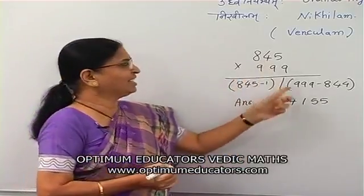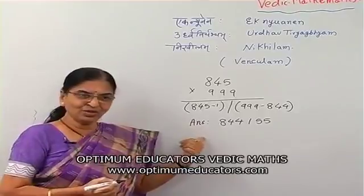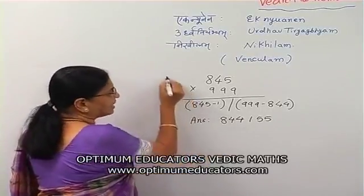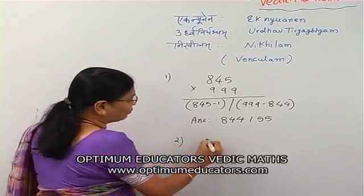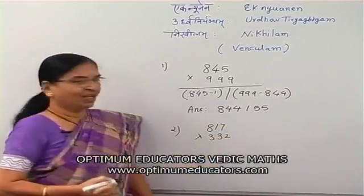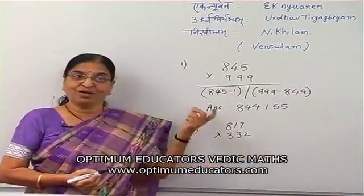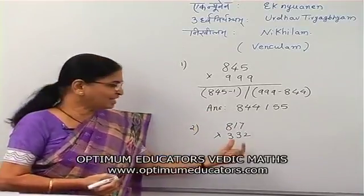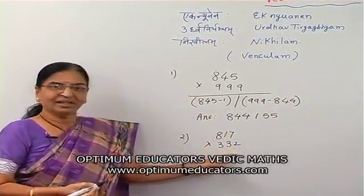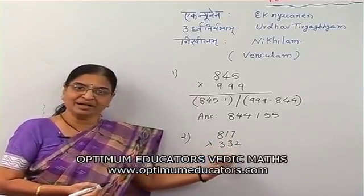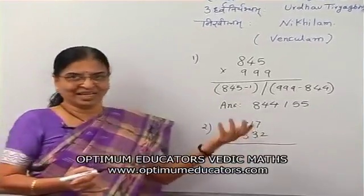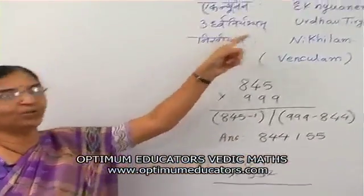The Eka-Niunena method is useful for that multiplication. Now suppose you have a second sum: 817 multiplied by 332. Here there are no 9's — the magic of 9 or Eka-Niunena method won't apply. The digits in the multiplier are also very small — just 3 and 2 — so in the one-line Vedic method, you can use the Urdhva-Tiryabhyam method.